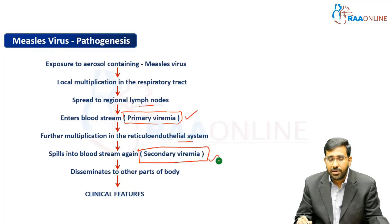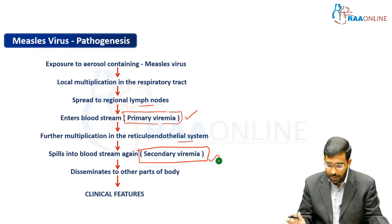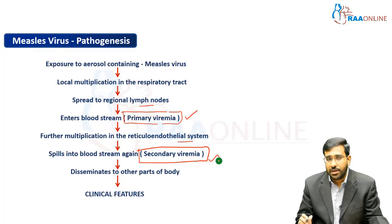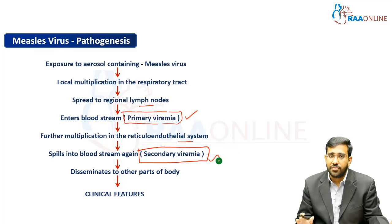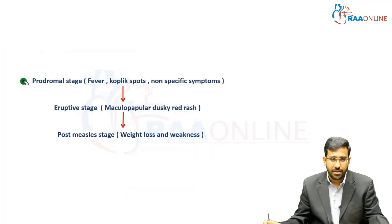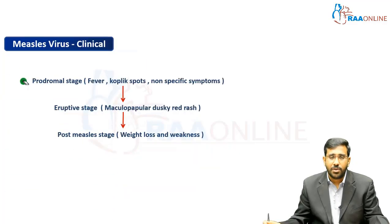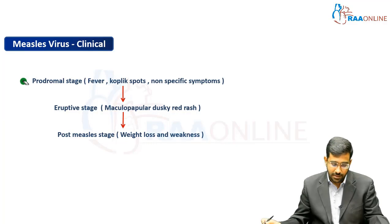Following secondary viremia, there is going to be a dissemination of this virus through the entire body. There is going to be the appearance of clinical features where the patient is going to have rash and fever. Now, we are moving into the clinical phases of the infection.